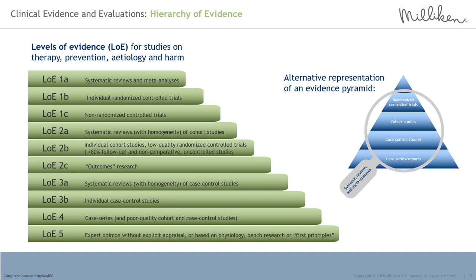Hierarchy of evidence — not all evidence has the same clinical value or weight. The hierarchy of evidence has been developed to support consistent and clear ranking of evidence weight, with an aim to unify how evidence is used internationally. Here we can see the levels of evidence for studies on therapy, prevention, etiology and harm, as set out in the World Union of Wound Healing Society's Evidence in Wound Care document. Level 1 evidence has been divided into three sub-categories: Level 1A, systematic reviews and meta-analyses; Level 1B, individual randomized controlled trials; and Level 1C, non-randomized controlled trials.